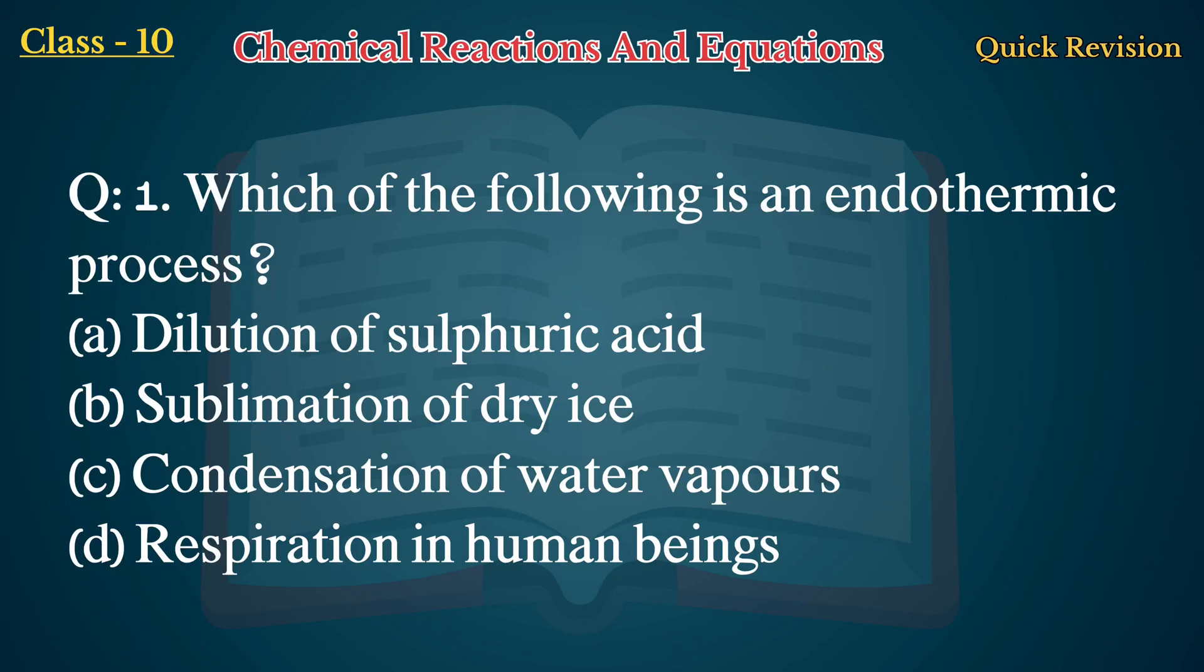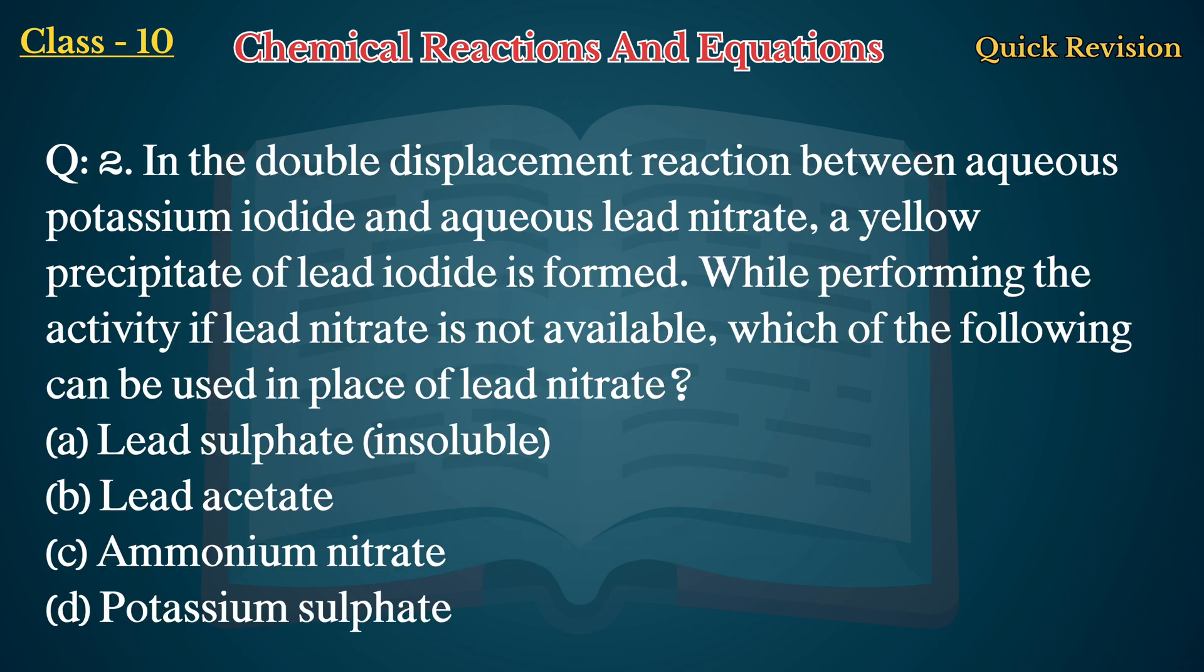Question No. 1: Which of the following is an endothermic process? A. Dilution of sulfuric acid, B. Sublimation of dry ice, C. Condensation of water vapors, D. Respiration in human beings. Answer: B. Sublimation of dry ice.